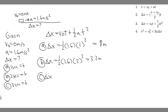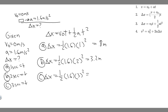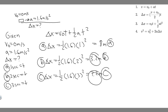Now let's do C, which is 3 seconds. It's going to be v-sub-0, which is 0, times t, which is 3 — still 0. Then one-half times a, which is 1.6, times t squared, which is 3 squared. 3 squared multiplied by 1.6, then multiplied by one-half, gives 7.2 meters. So for A this is 0.8 meters, B is 3.2 meters, and C is 7.2 meters — that's how far she travels in 1, 2, and 3 seconds.